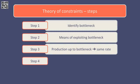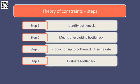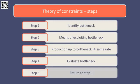Step four is to work out ways to elevate the bottleneck. This means working out ways of increasing the output at the bottleneck point, so that total output can increase. And step five is to return to step one. Eventually, by removing one bottleneck, another is likely to appear, so at this stage we would need to go back to step one and repeat these five steps.